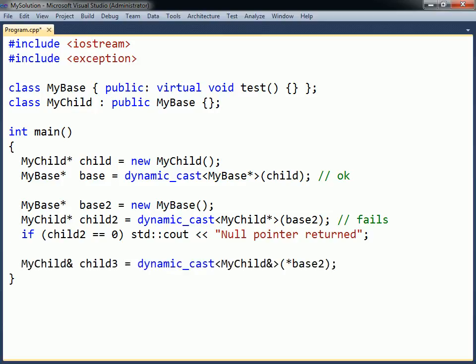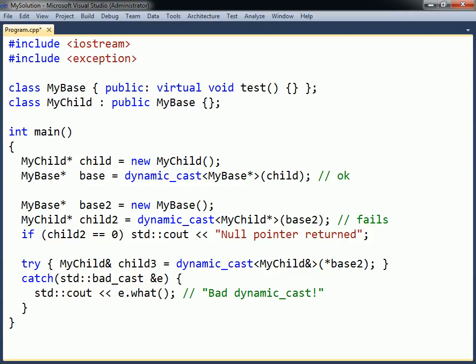If a reference is converted instead of a pointer, the dynamic cast will then fail by throwing a bad cast exception. This needs to be handled using a try-catch statement.